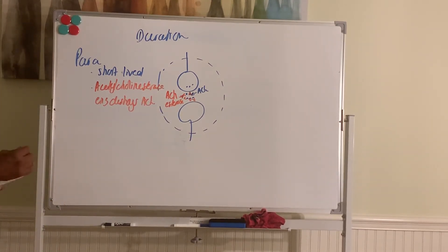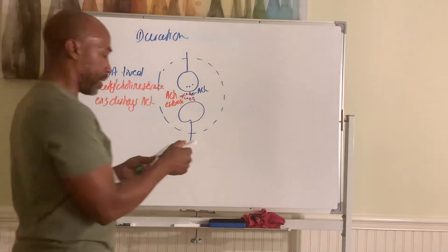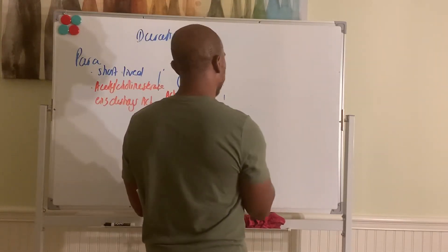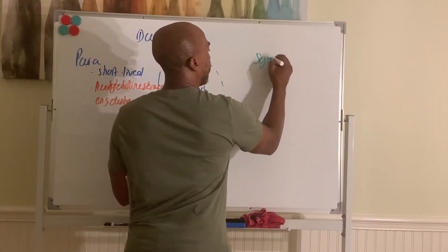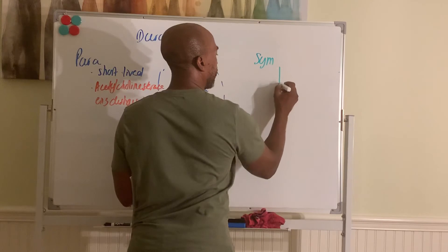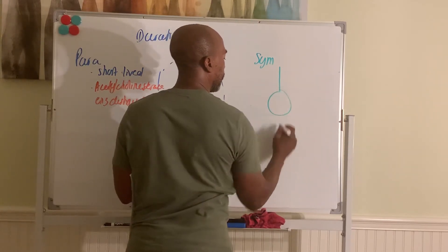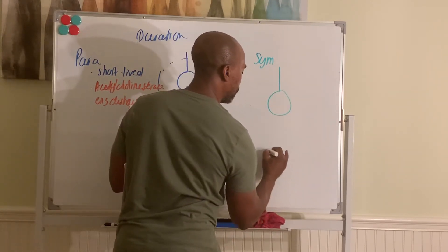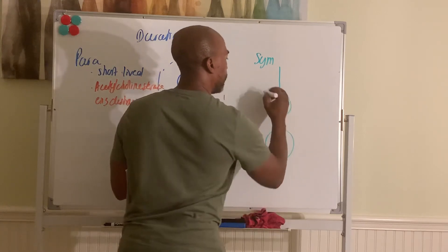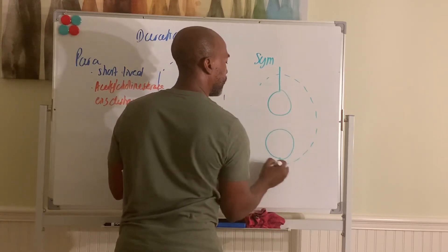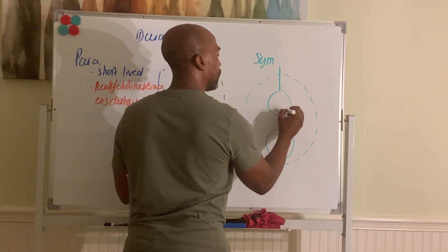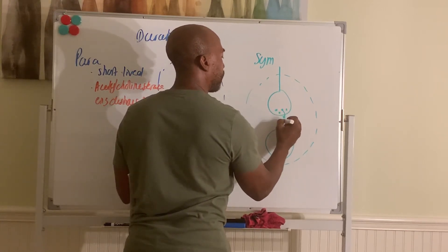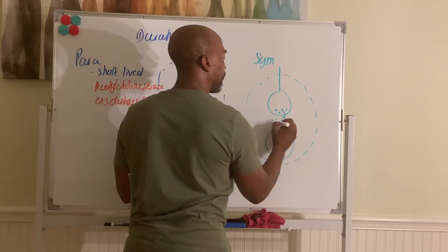However, in the sympathetic situation, in that division, it's a bit different. So in sympathetic division here you have again the incoming neuron and the post. Here's a ganglia. So here now you have norepinephrine coming out. So this is your norepinephrine inside the cleft.